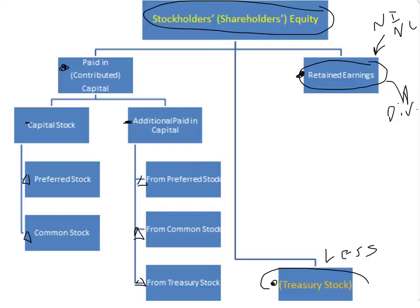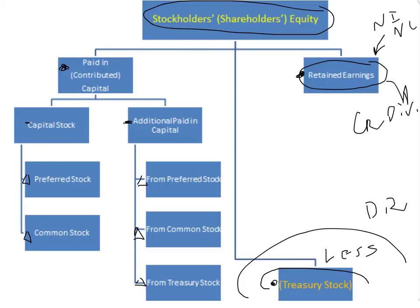Please remember overall that all these accounts are normal equity accounts — their balances will be credits. Treasury stock is a contra equity account, so for this account the normal balance will be debit.